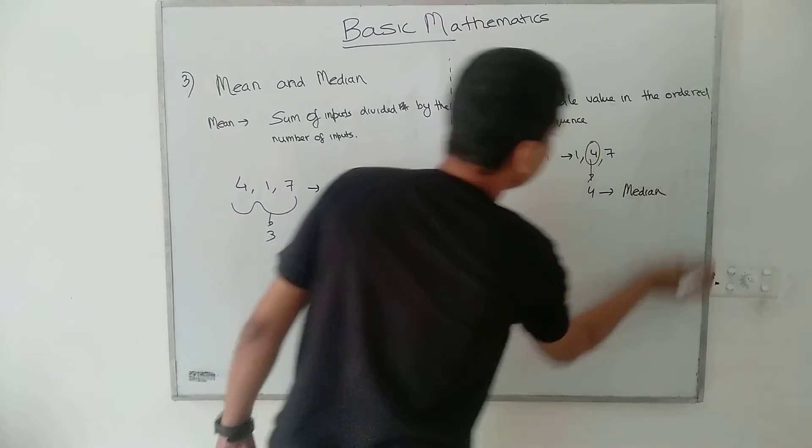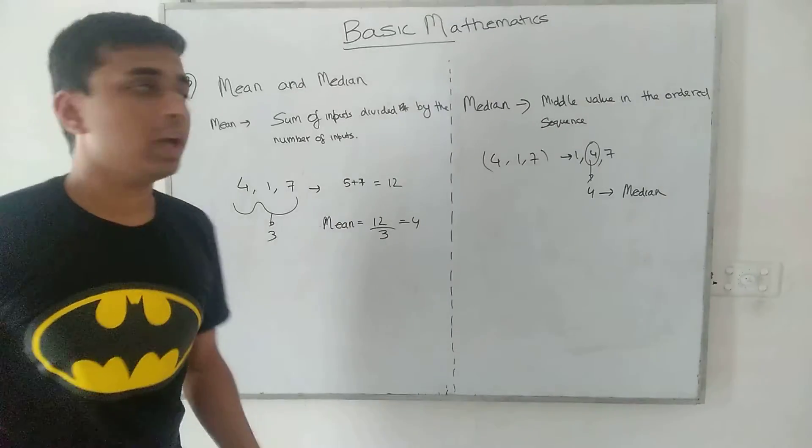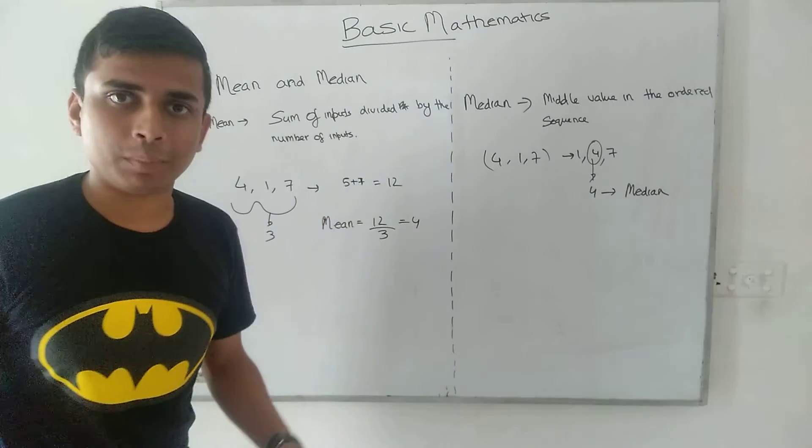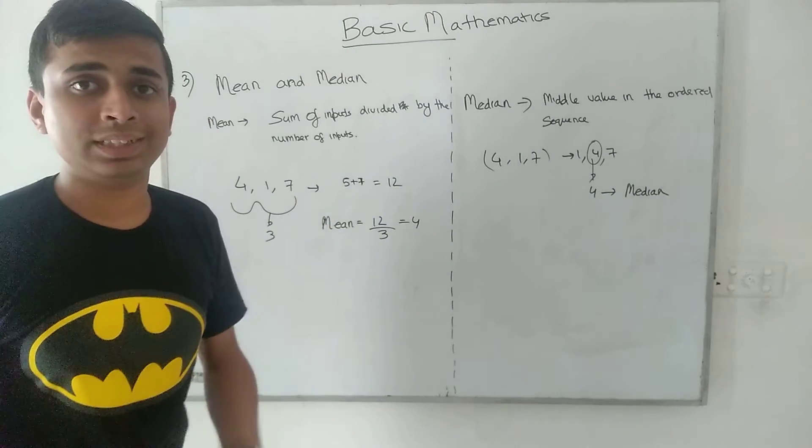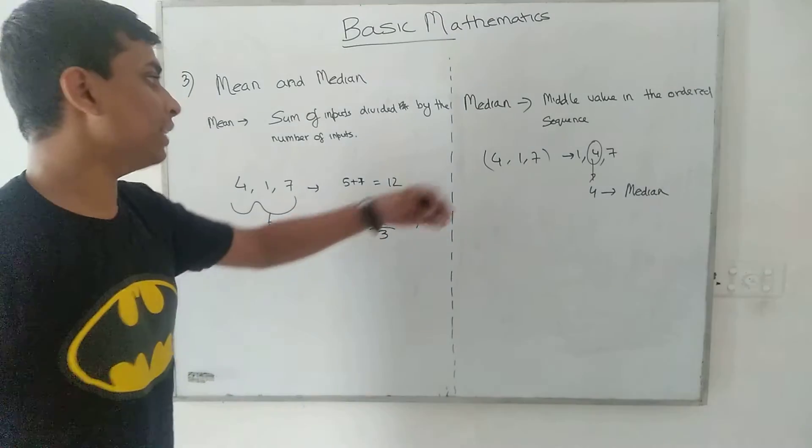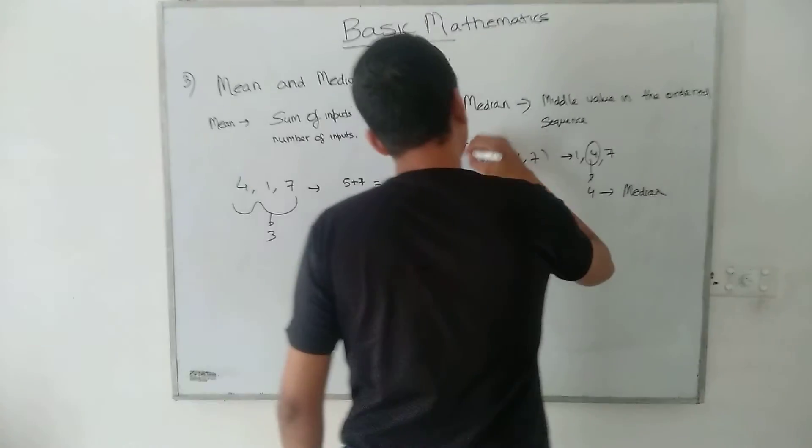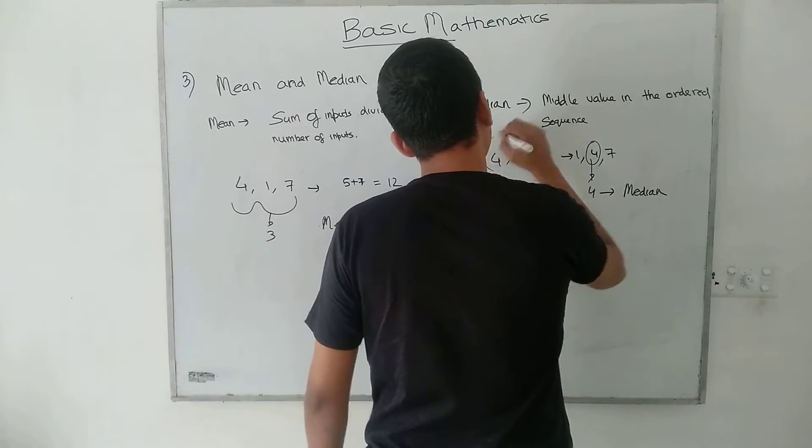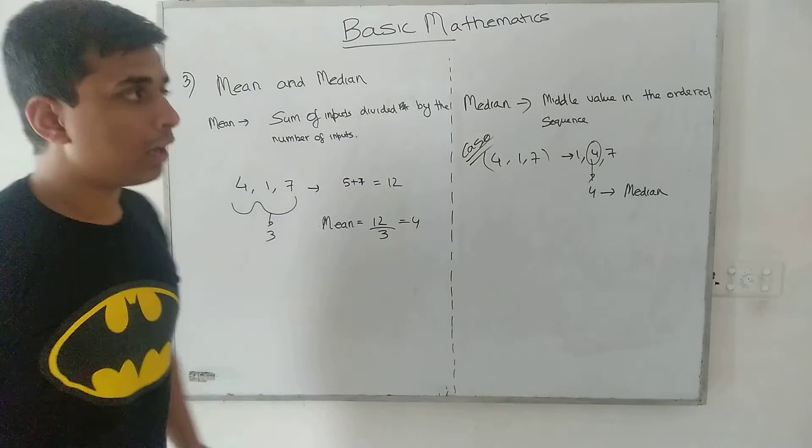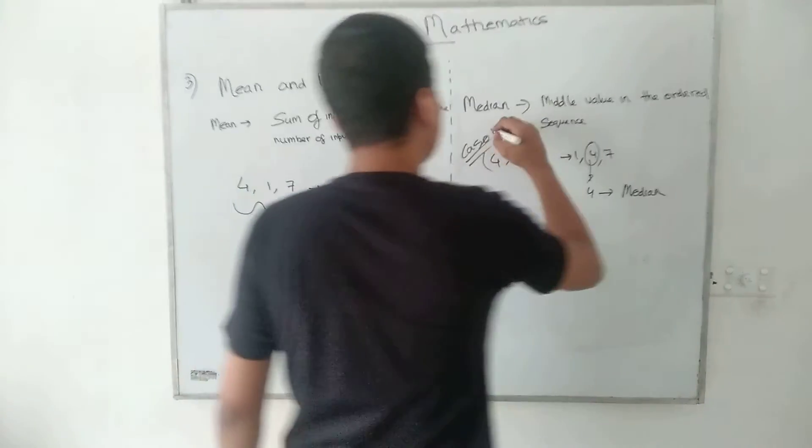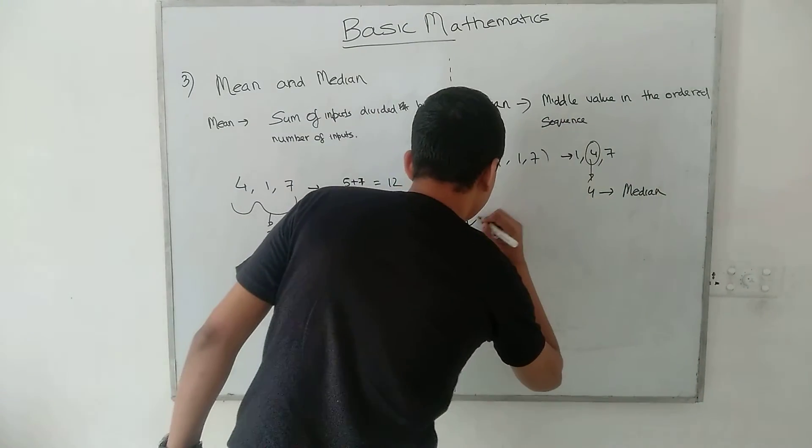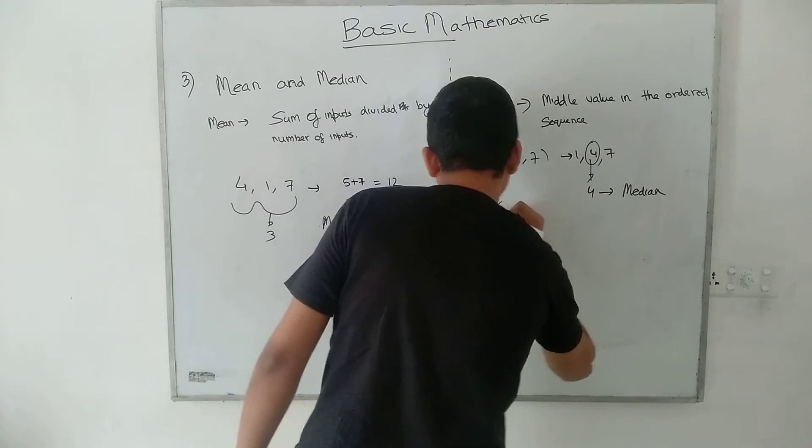What if we are provided a sequence of numbers and we are getting two elements that are present in the middle? In this case, we have taken the case of an odd length sequence. What if we are taking an even length sequence?